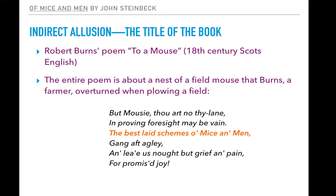'But mousy, thou art know thy lane, in proving foresight may be vain. The best laid schemes, O mice and men, gang after glee, unlee us not but grief and pain for promised joy.' In this last stanza, the farmer is talking to the mouse and saying that choosing to put your nest in this lane — in proving foresight may be vain — was a bad idea. You didn't really think ahead putting it in my field.